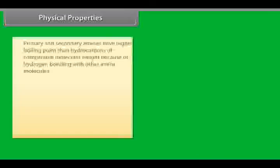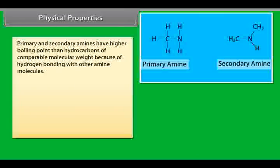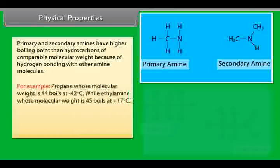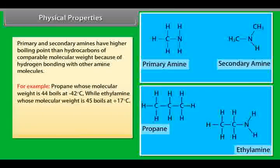Primary and secondary amines have higher boiling point than hydrocarbons of comparable molecular weight because of hydrogen bonding with other amine molecules. For example, propane whose molecular weight is 44 boils at -42°C while ethylamine whose molecular weight is 45 boils at +17°C.